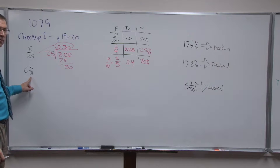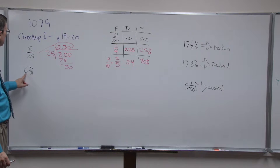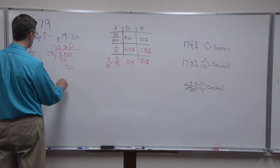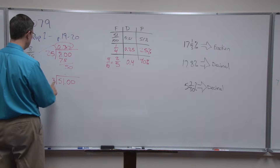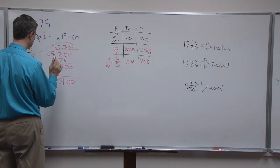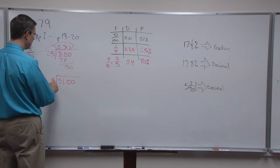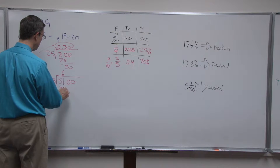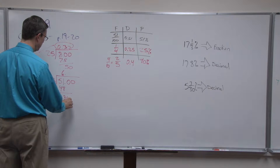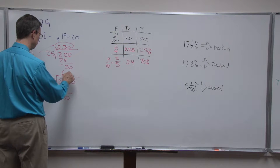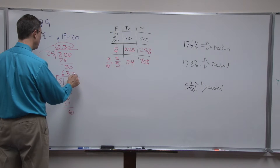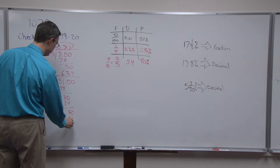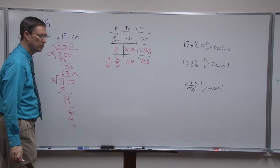It gets more challenging with a mixed number. For 6 and 3/8: six times eight is 48, plus three is 51, so put 51 underneath and divide by 8. Six times eight is 48, subtract and get 30; eight times three is 24, bring down and get 6; eight times seven is 56, bring it down and we get 40. So the result so far is 6.375.